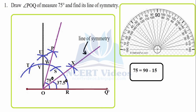First, draw a line segment and mark points at both extreme ends. Make a semicircle with a reasonable radius, marking it R. Open the compasses with radius OR and draw an arc — name it S. Then with the same radius, put the compasses needle at S and draw an arc cutting at T.